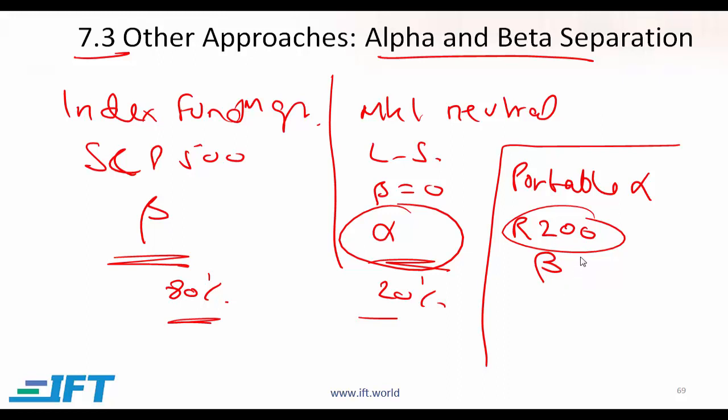So you get your beta exposure. You get your large cap US market return by giving your money to a fund manager who is investing in the Russell 2000. Do you think the investment fee will be high here or low? The fees are likely to be low. If you have a fund manager who's simply managing against an index, fees are low because this is clearly a passive strategy.